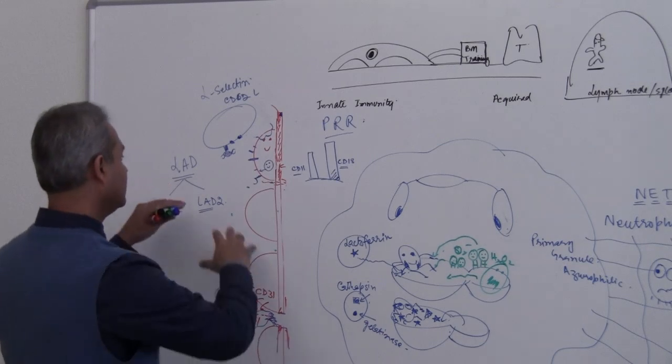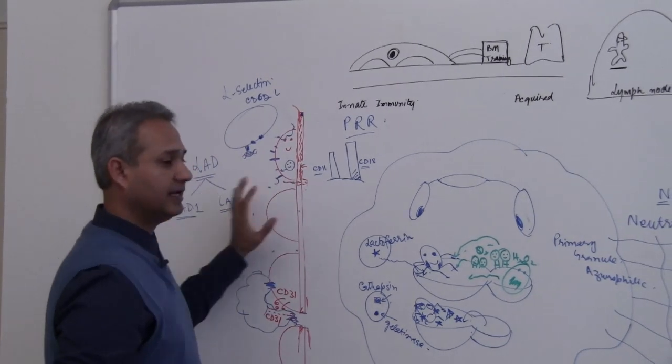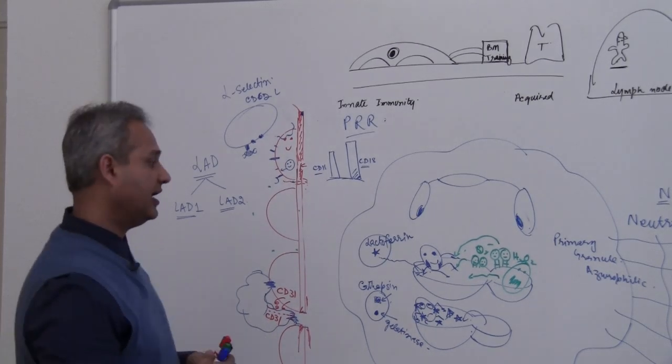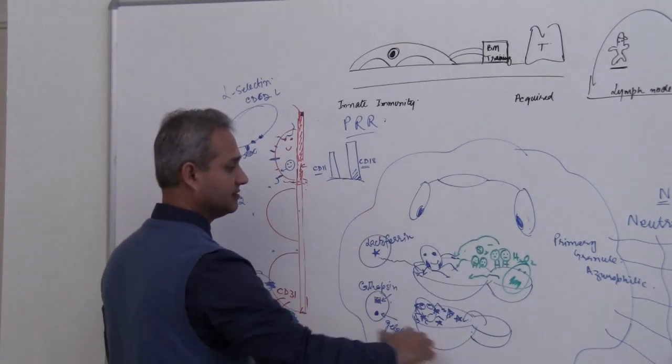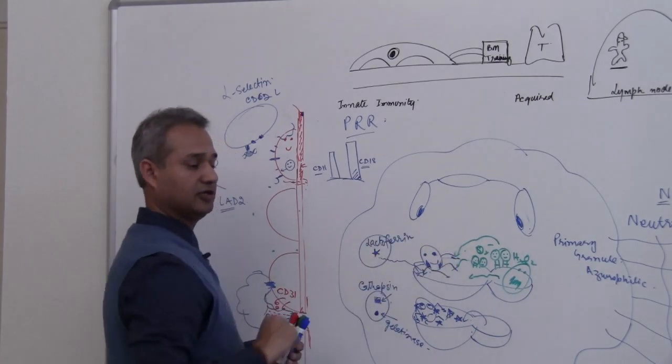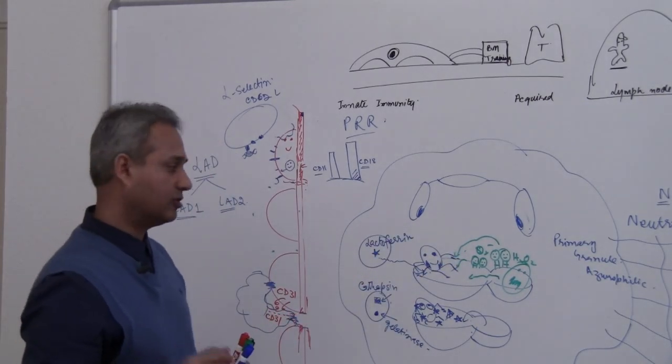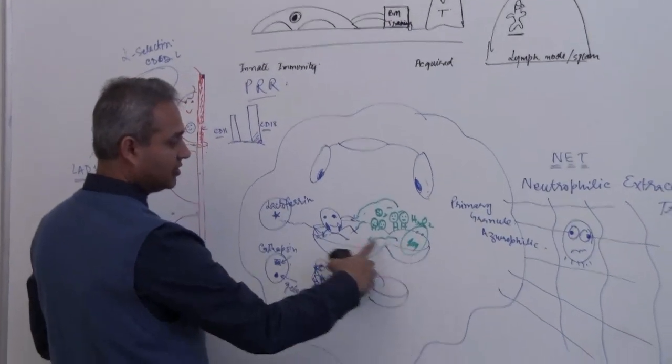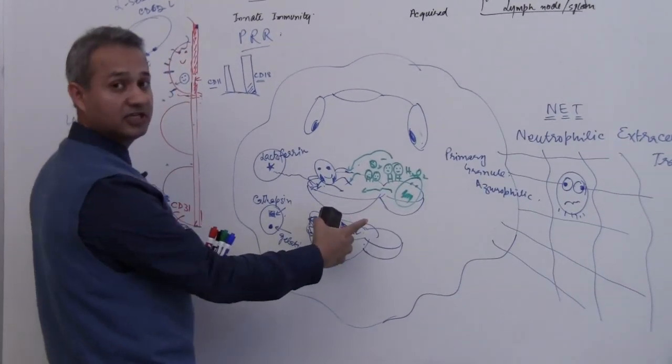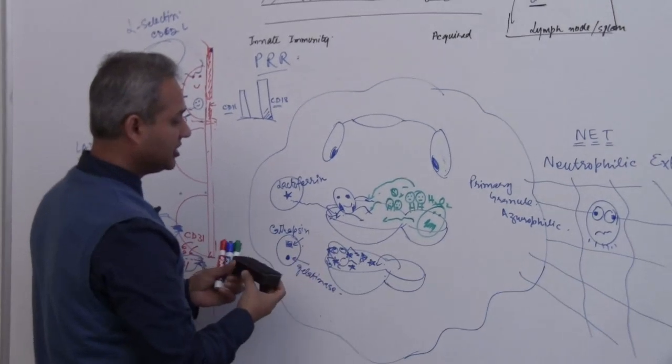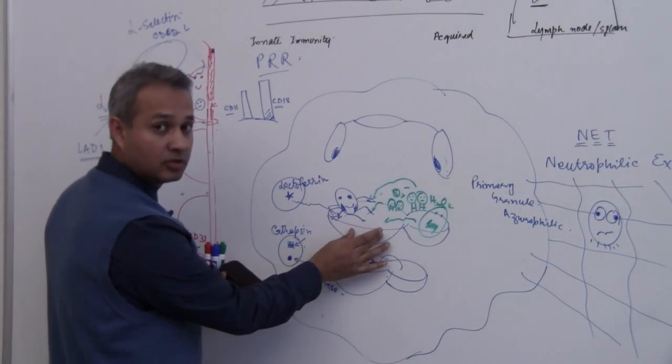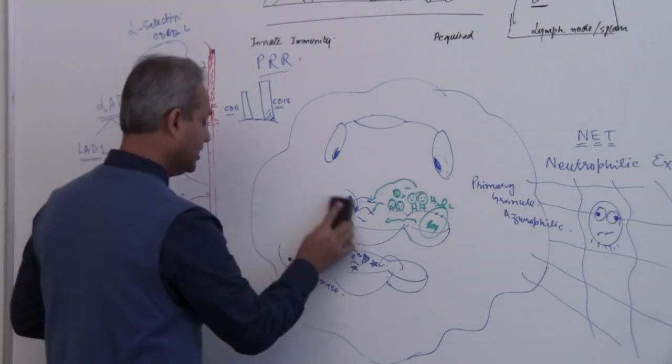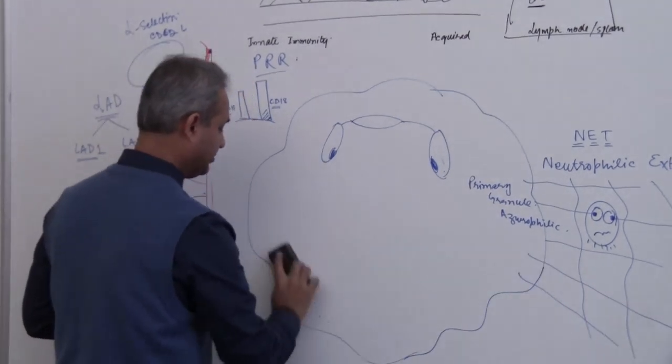Let's say the leukocyte does not have this type of problem. It can actually come into the system and do the function. Then we have a couple of diseases which are related to the internal function of the leukocyte. Keep this picture in mind - we have a phagosome and a lysosome and they have fused. So now let's see how that happens.